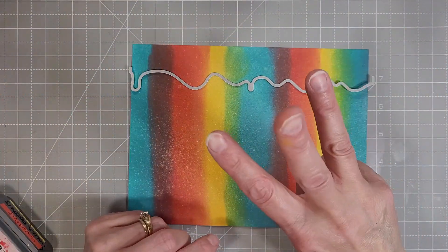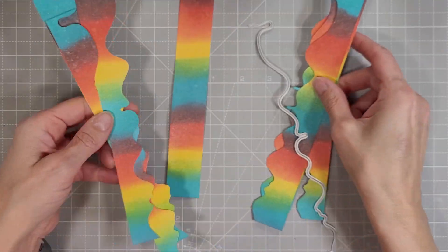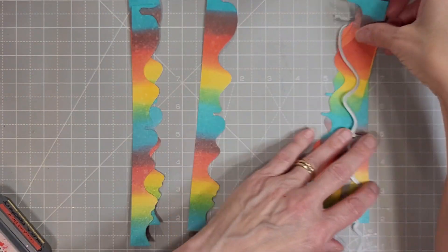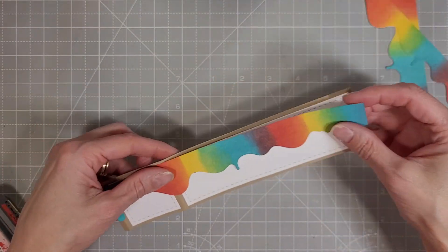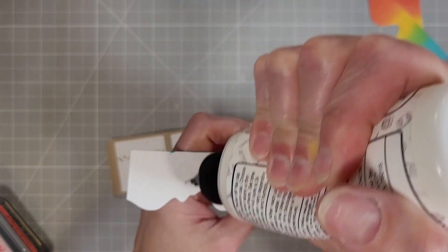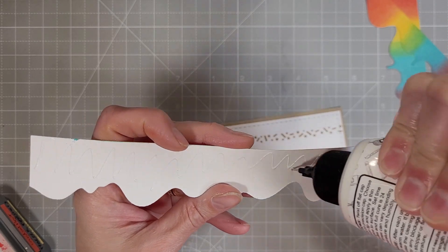Now we're going to take our drippy frosting and we're going to die cut that three times and I'm going to keep the negatives also. So I die cut and then trim, die cut and then trim. So we end up with six strips of this frosting.